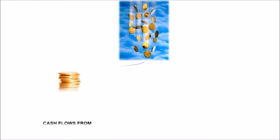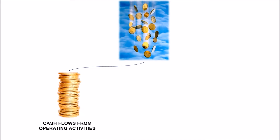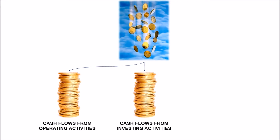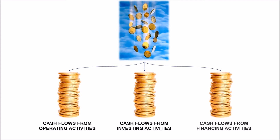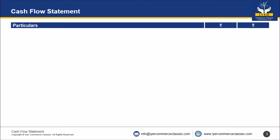Next, we go to the cash flow statement. The cash flow statement is divided into three parts: number one, cash flows from operating activities; cash flows from investing activities; and the last one, cash flows from financing activities. Friends, let us start with the cash flow statement.